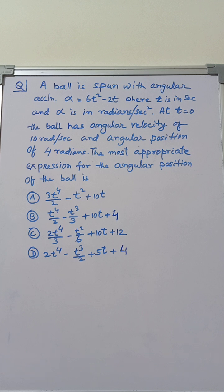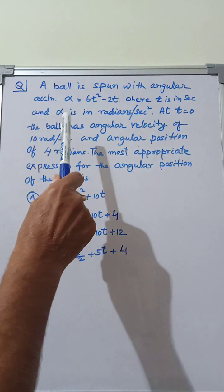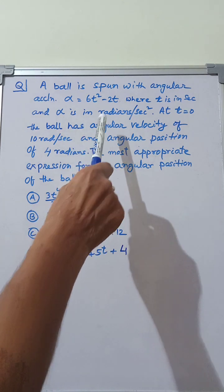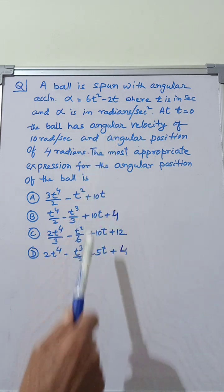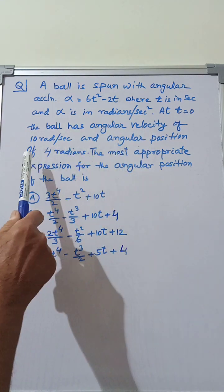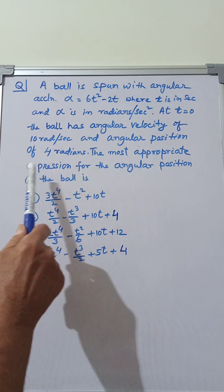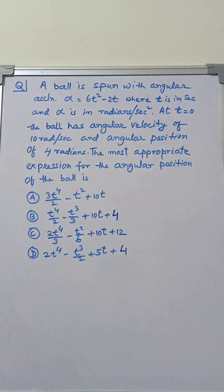Read the question carefully. A ball is spun with angular acceleration alpha equal to 6t² minus 2t, where t is in seconds and alpha is in radians per second squared. At t equal to 0, the ball has angular velocity of 10 radians per second and angular position of 4 radians. The most appropriate expression for the angular position of the body is to be found from the given options.